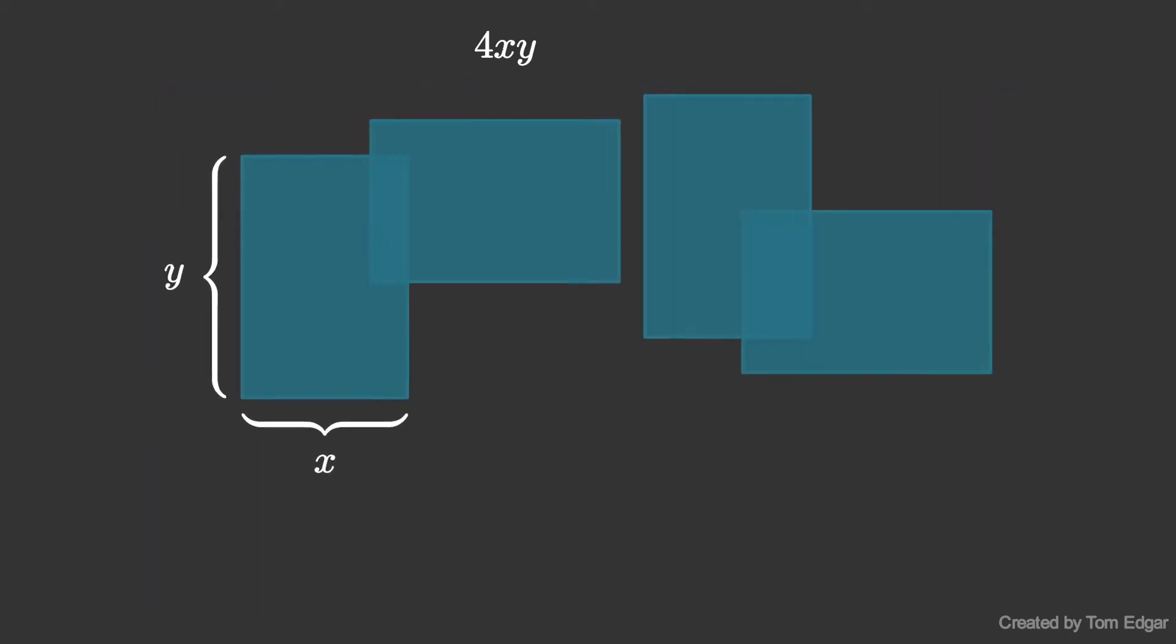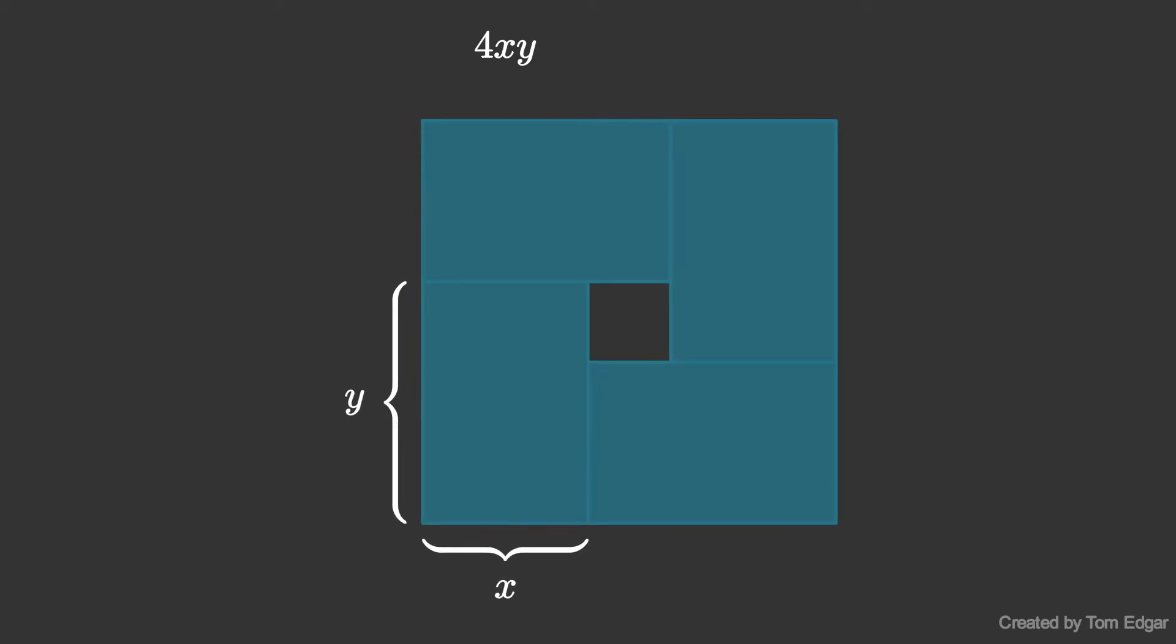Arranging these rectangles in this special way produces a square of side length x plus y with a missing inner square of side length y minus x.